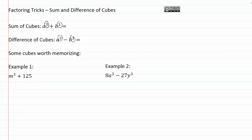We'll start by discussing sum of cubes. Sum means addition, so we're adding two terms together. Here we've got something like a cubed plus b cubed, so a cubed plus b cubed would be a sum of cubes. The basic formula when we go to factor that is going to be: a, the cube root of the first term, plus b, the cube root of the second term. And then in our next set of parentheses we're actually going to have three terms. I like to remember it as three terms to go along with the three in the exponent in my original expression.